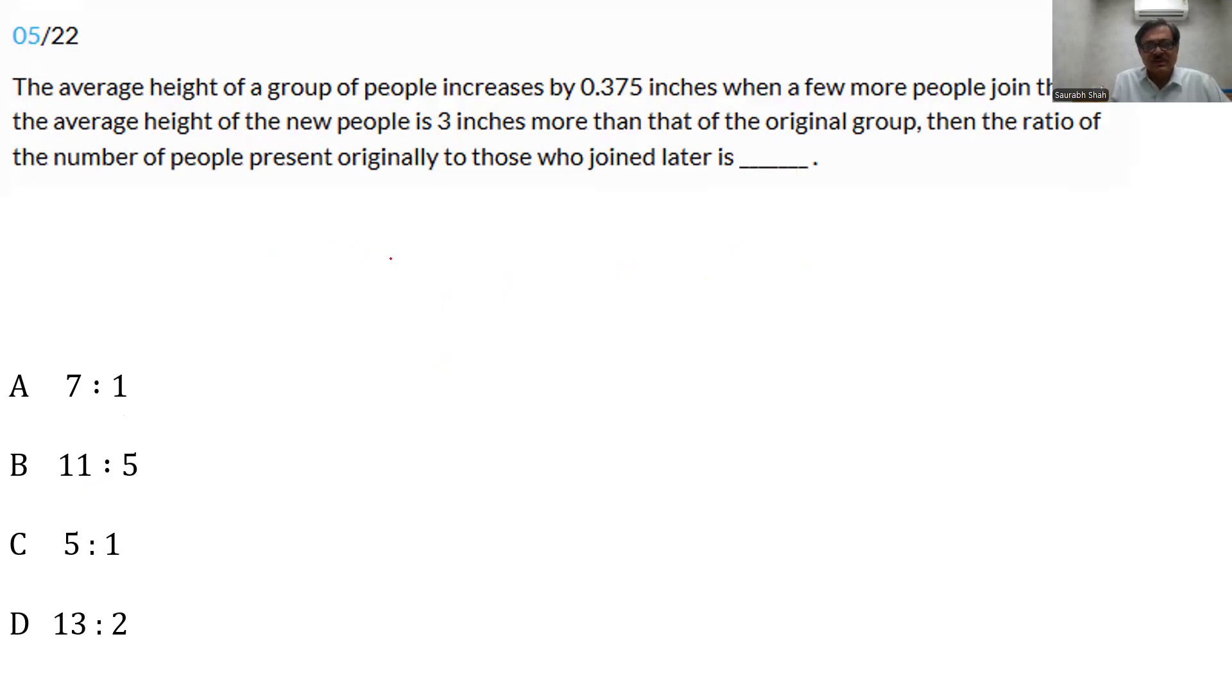Allegation mixtures. We can solve by two methods: allegation mixtures or trial and error or going by options. The average of the original people is A. The new group is A plus 3 and the combined is A plus 0.375 which is 3 by 8. So simply do the allegation cross. A and A plus 3 by 8 is 3 by 8 difference. And this difference, we are supposed to do 3 minus 3 by 8 which gives us 24 minus 3, 21 by 8. So take the ratio: 8 cancels out, 3 also cancels out and you get 7 is to 1. And we have an answer.